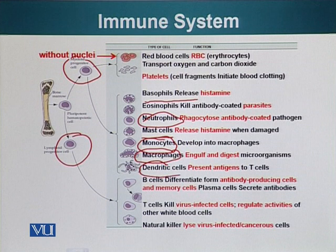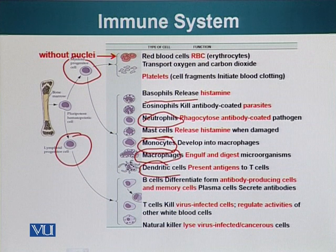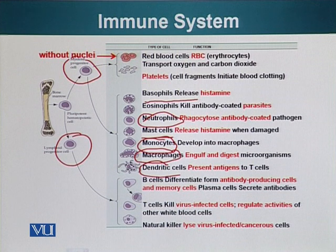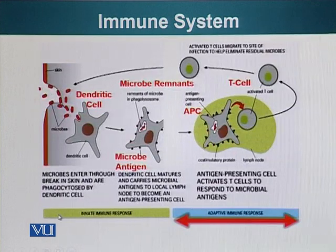There's another class of cells we will talk about in more detail later: the dendritic cells. These dendritic cells are also phagocytic in nature. They ingest bacteria or the pathogen, degrade it into little fragments, and present the parts of the pathogen — displaying it on their surface and presenting it to other immune cells.